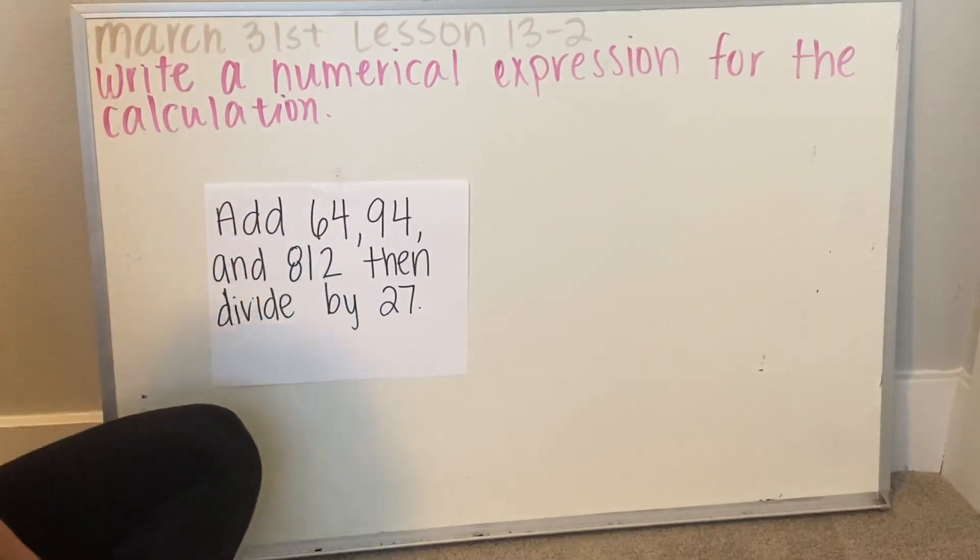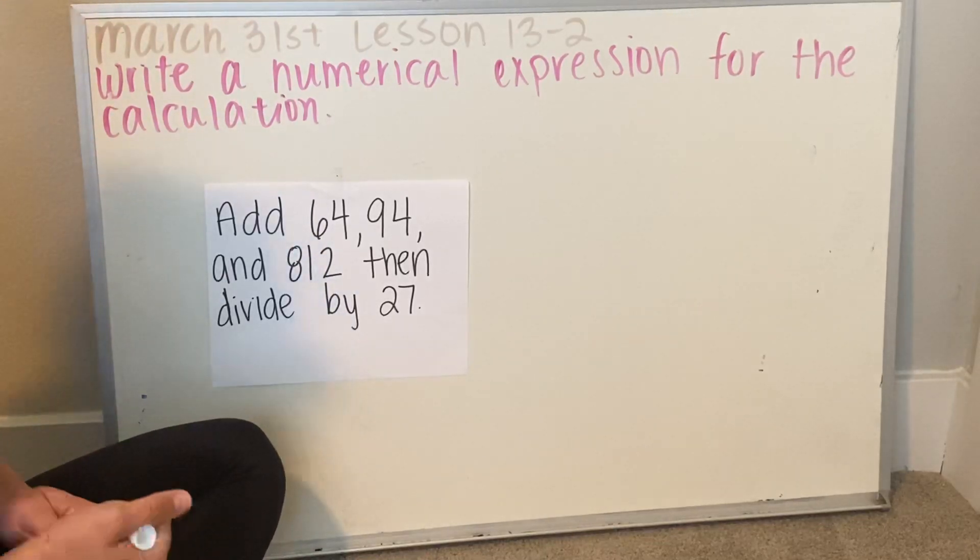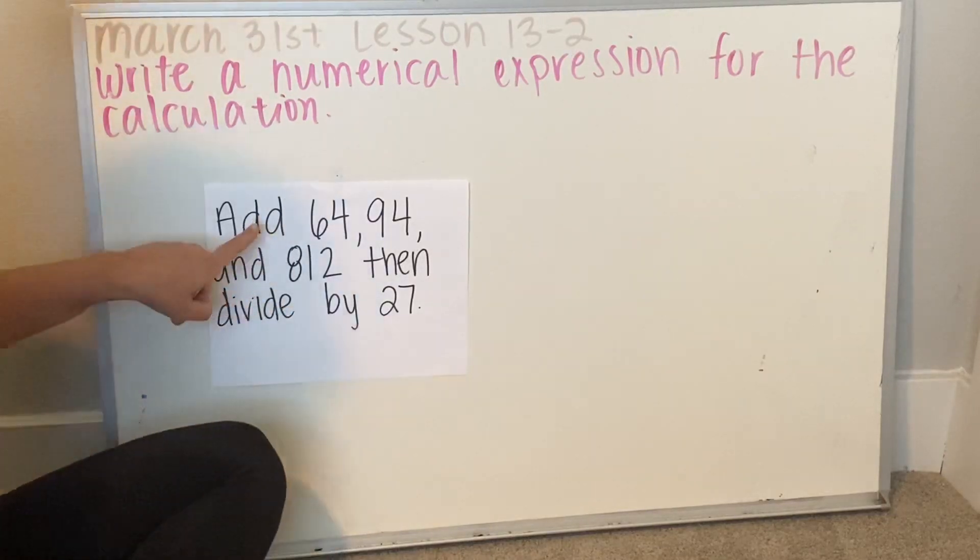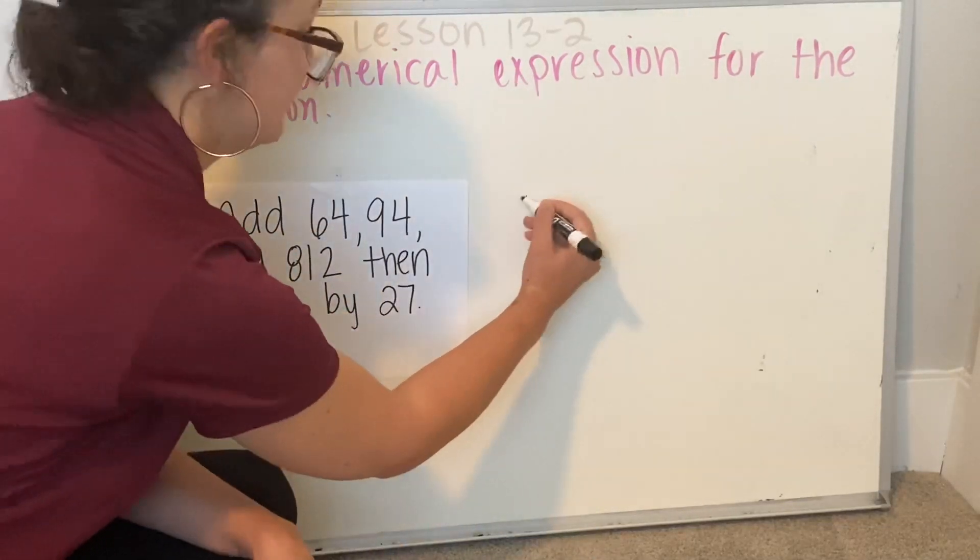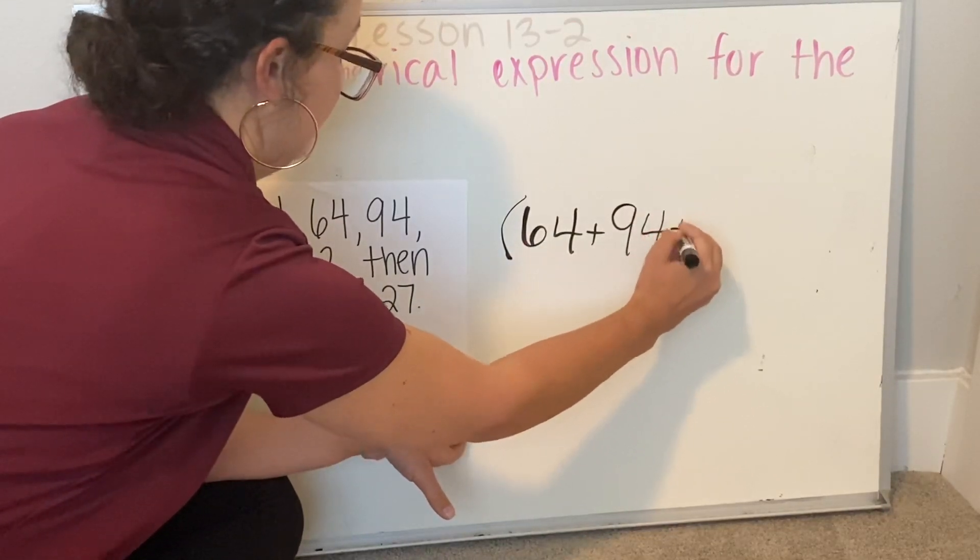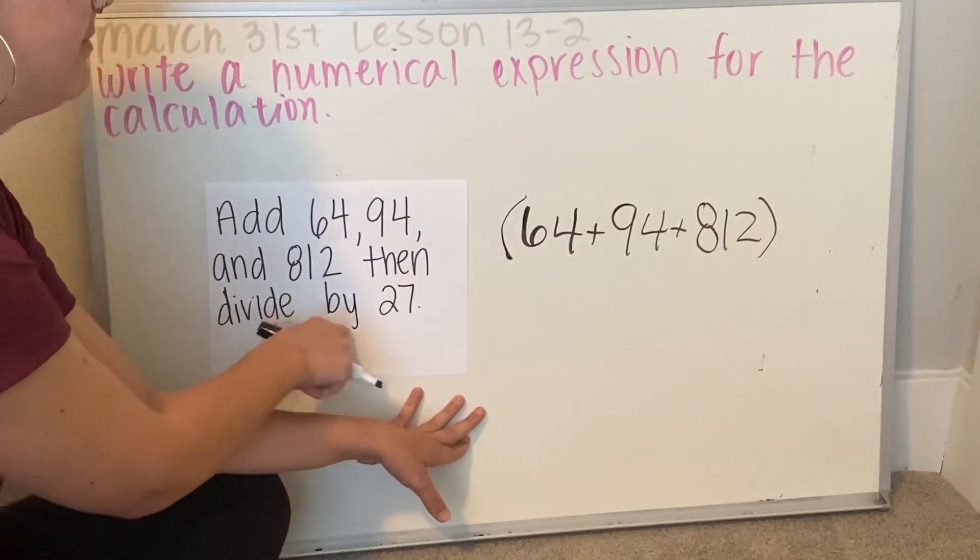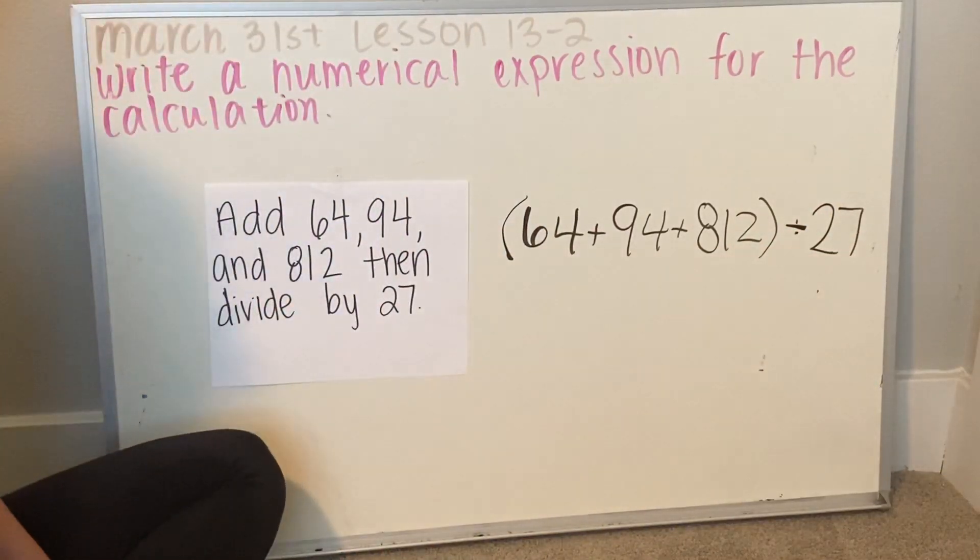This first one says add 64, 94, and 812, and then divide by 27. So you need to know when you're writing a numerical expression what to do first and second. So first I'm going to add 64, 94, and 812, and I'm going to put that into parentheses, and then divide by 27. That's how you do this first one.